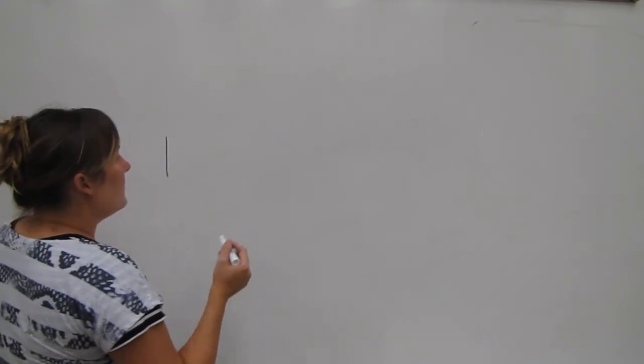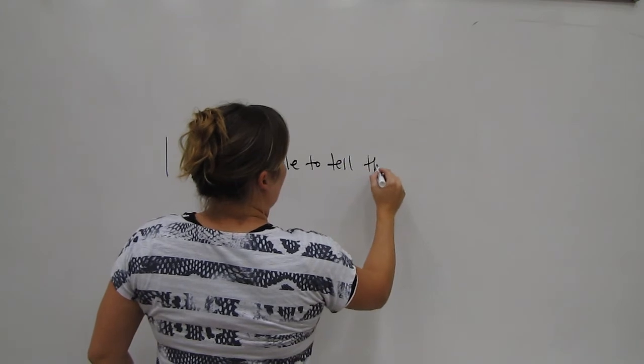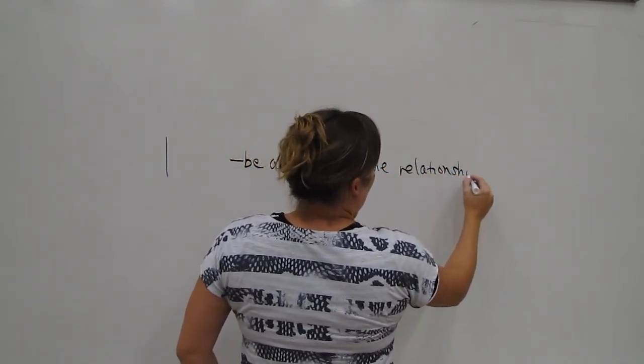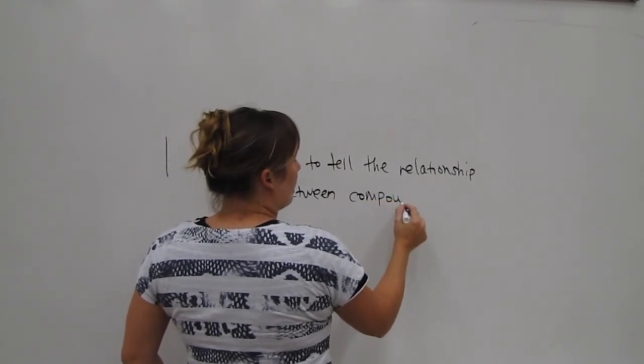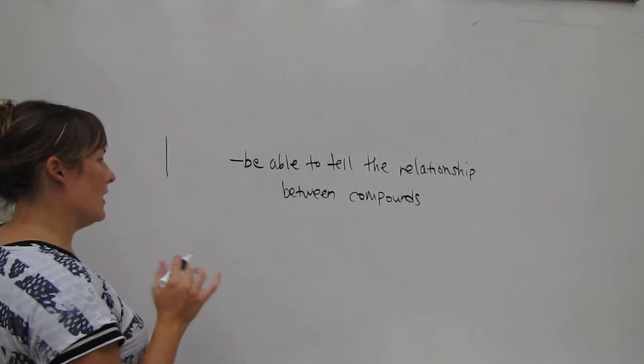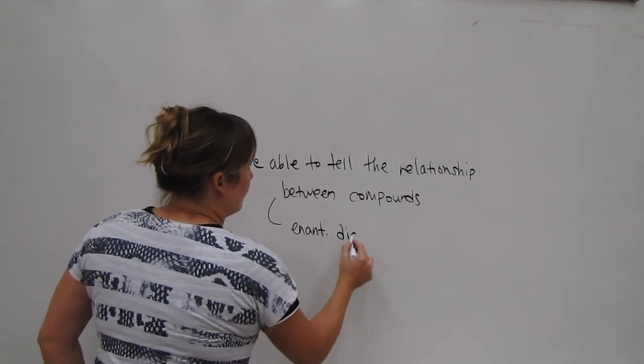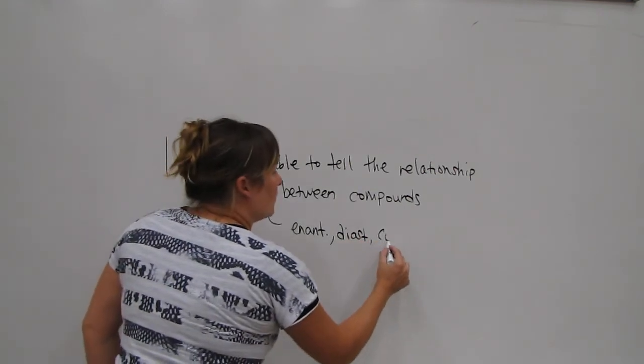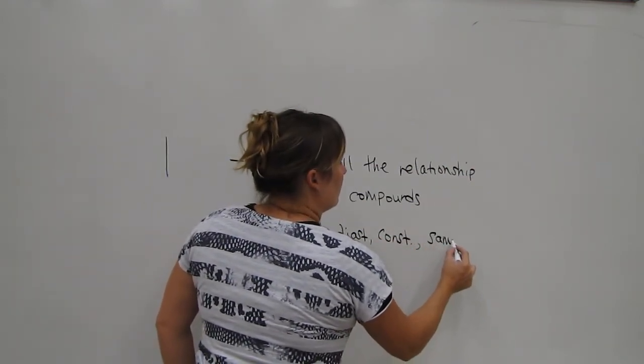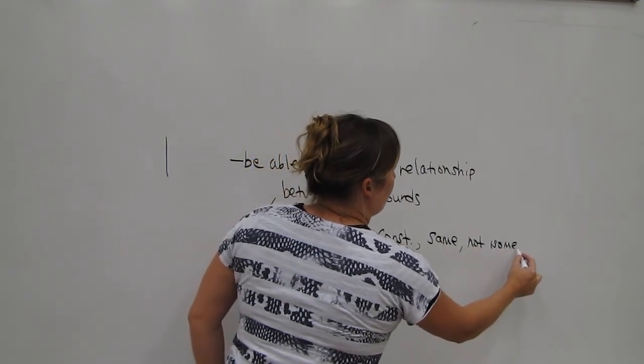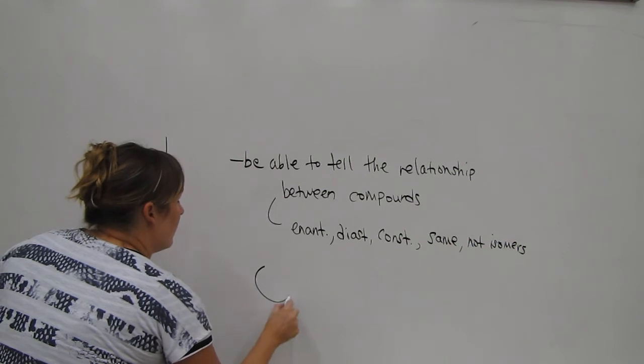So one last thing from chapter 5 is you need to be able to tell the relationship between compounds. And your answers to these when two compounds are compared is enantiomers, diastereomers, they're constitutional isomers, meaning they're connected differently, it's the same compound drawn twice, or they're not isomers at all, which means they're not even the same molecular formula.